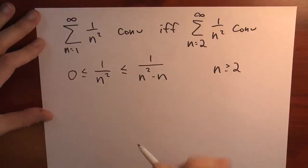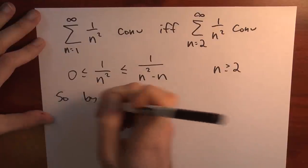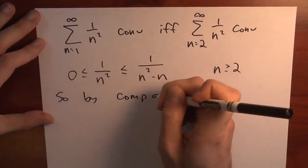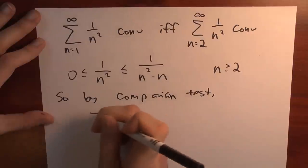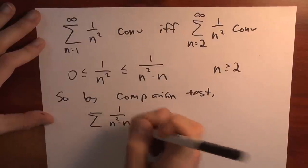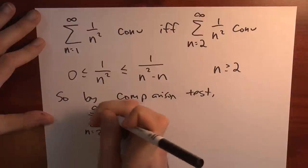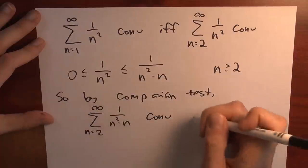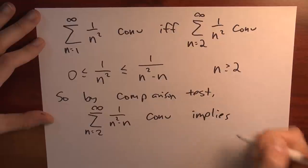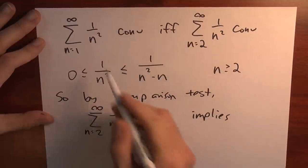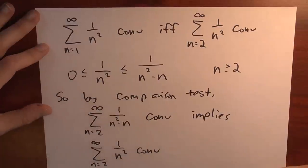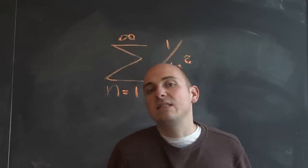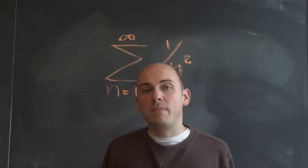By the comparison test, if the sum of 1 over n squared minus n, with n going from 2 to infinity, converges, then that implies the smaller sum — the sum of 1 over n squared, n from 2 to infinity — also converges. So now I want to analyze the sum of 1 over n squared minus n.